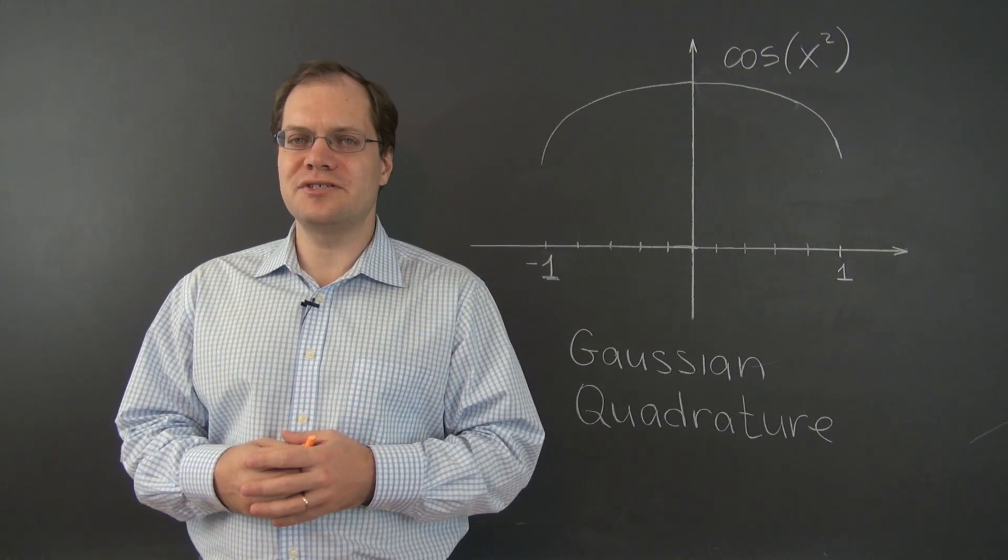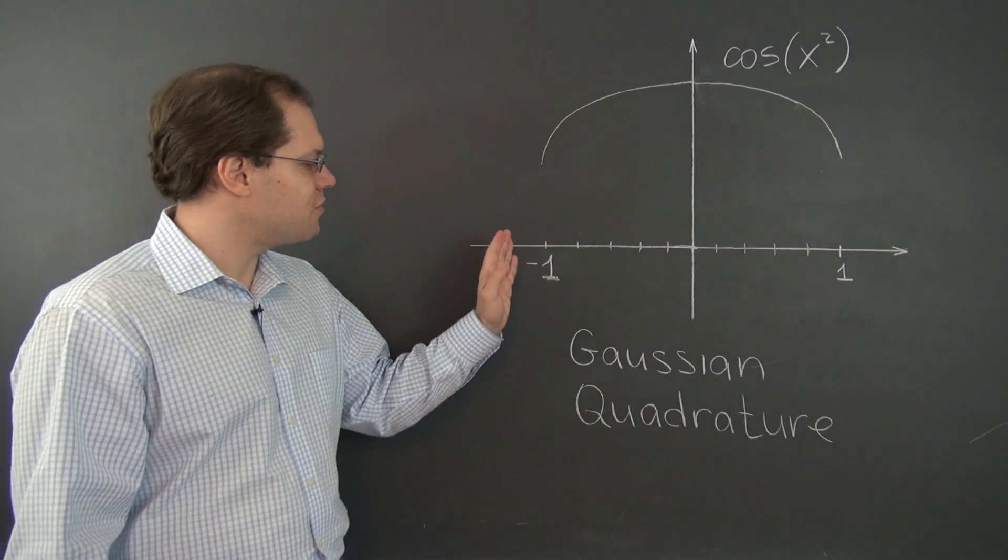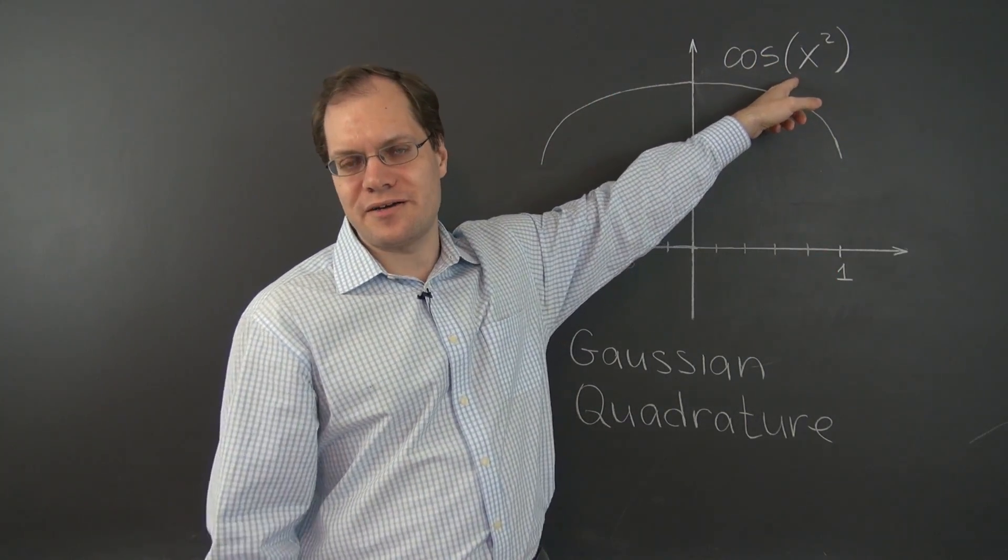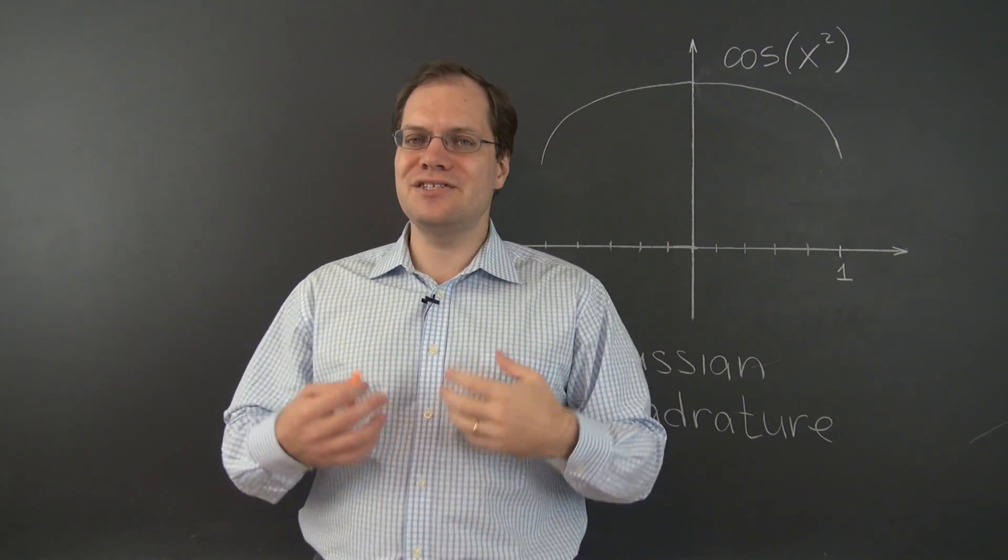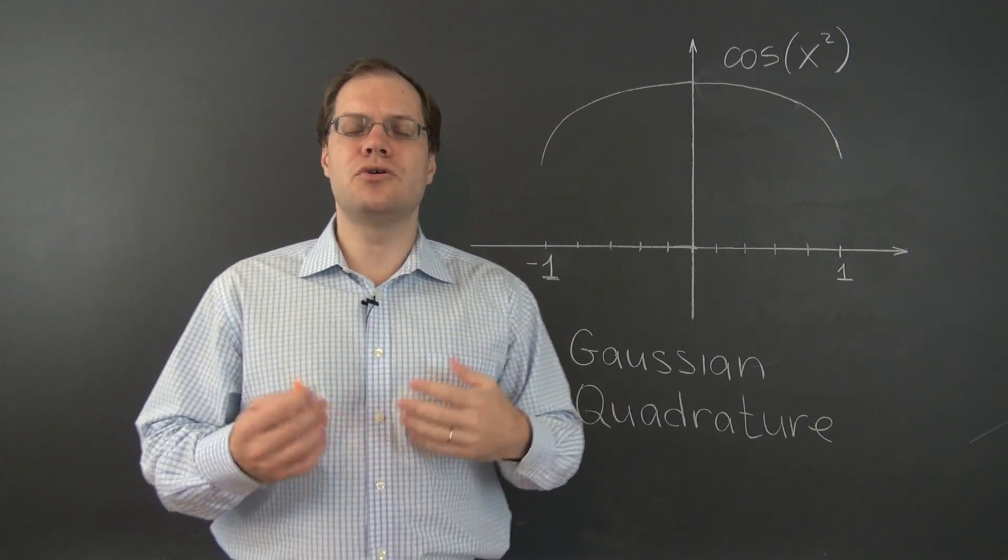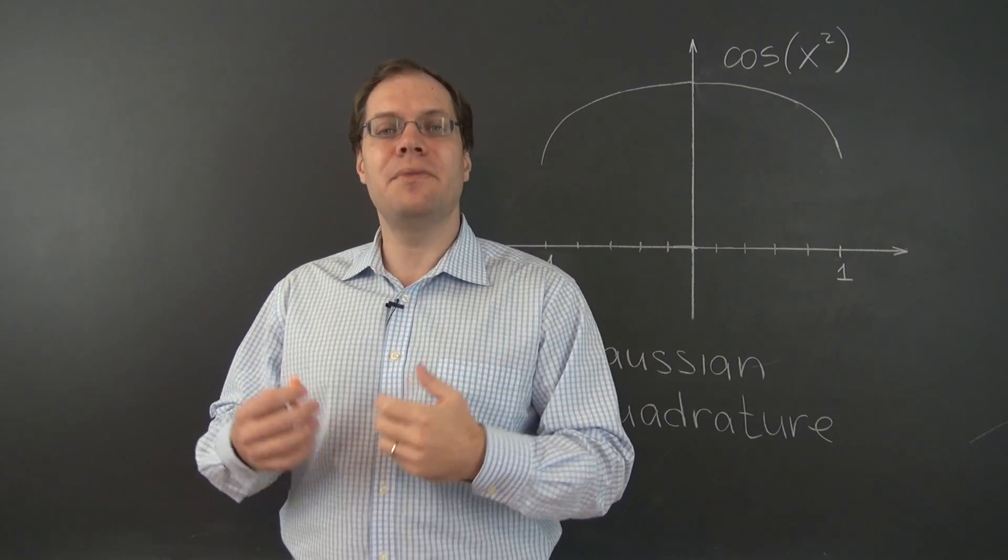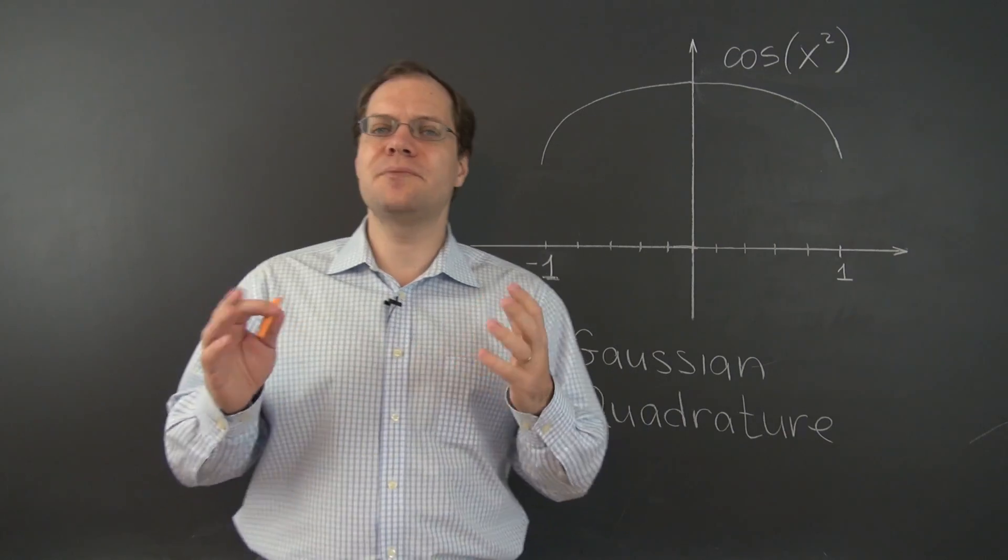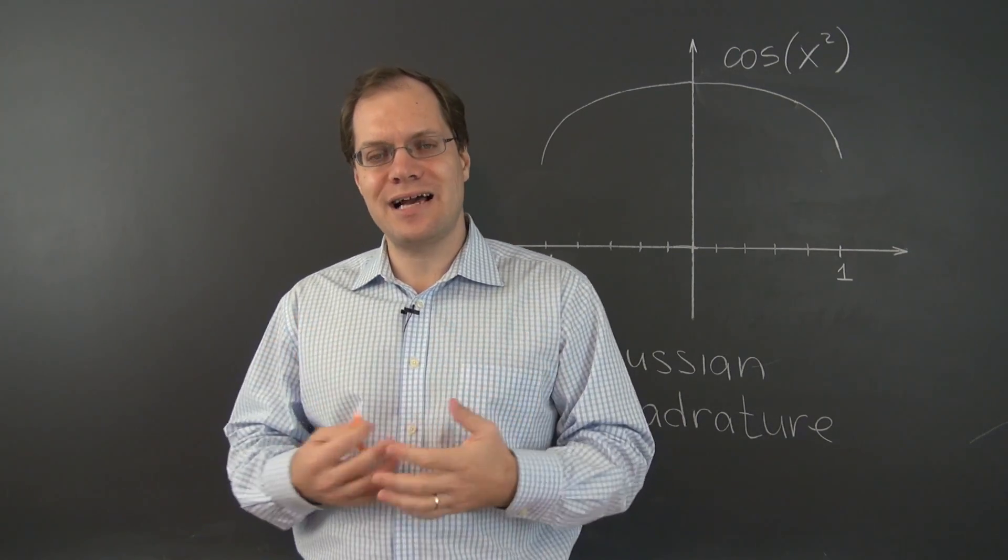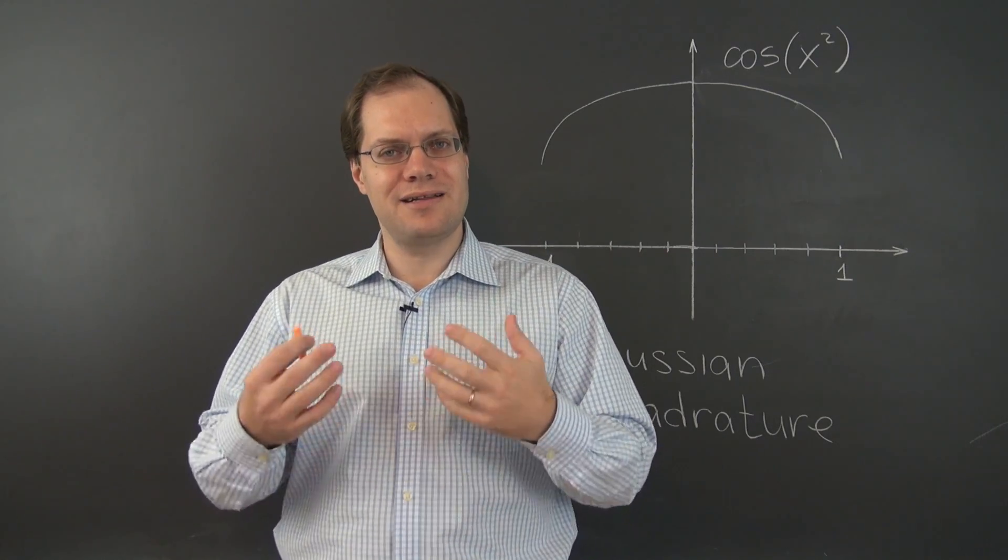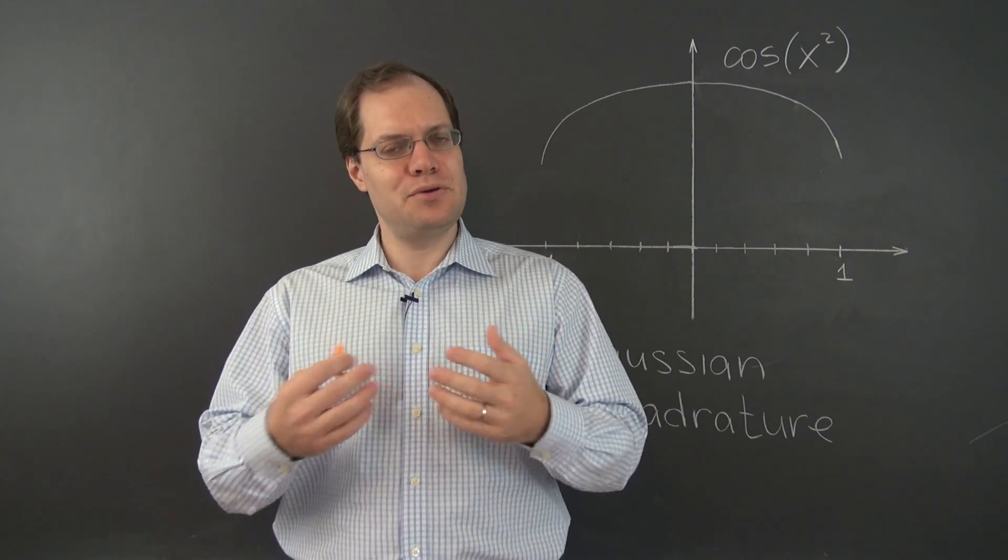Suppose that you're interested in finding the area under the graph from minus 1 to 1 of a function such as cosine of x squared, whose antiderivative is very difficult to find. Using the fundamental theorem of calculus, like you were taught in your calculus course, may be impossible. However, suppose that you're not really interested in the exact expression but would be perfectly happy with a reasonable numerical estimate. How would you compute that estimate?